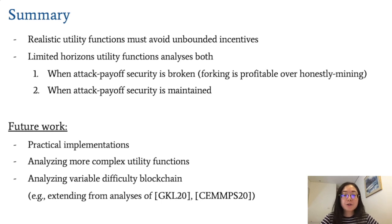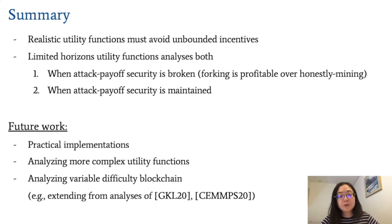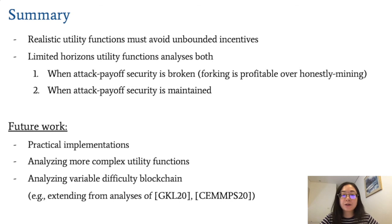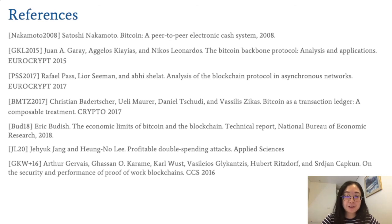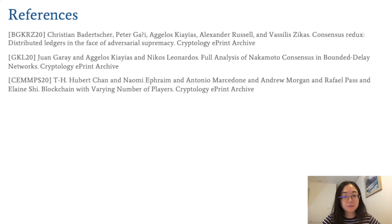In summary, we first showed why realistic utility functions must avoid the problem of unbounded incentives. Then we showed that the class of utility functions with limited horizons avoids this problem and can be used to analyze both when attack payoff security is broken and when it is achieved. Future directions include implementations, analyzing more complex utility functions, and extending our results to variable difficulty blockchains. Thanks for watching.